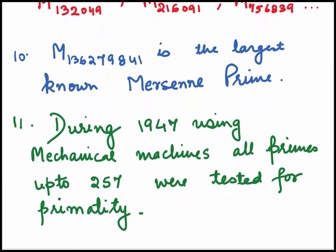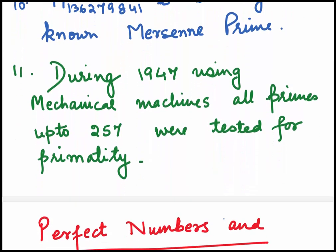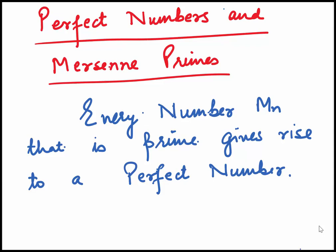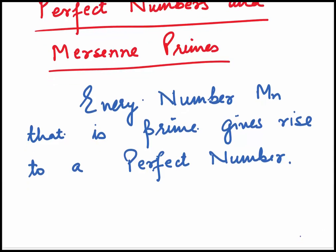During 1947, using mechanical machines, all primes up to 257 were tested for primality. Mersenne numbers are very closely related to perfect numbers. It was said every number Mn that is prime gives rise to a perfect number.